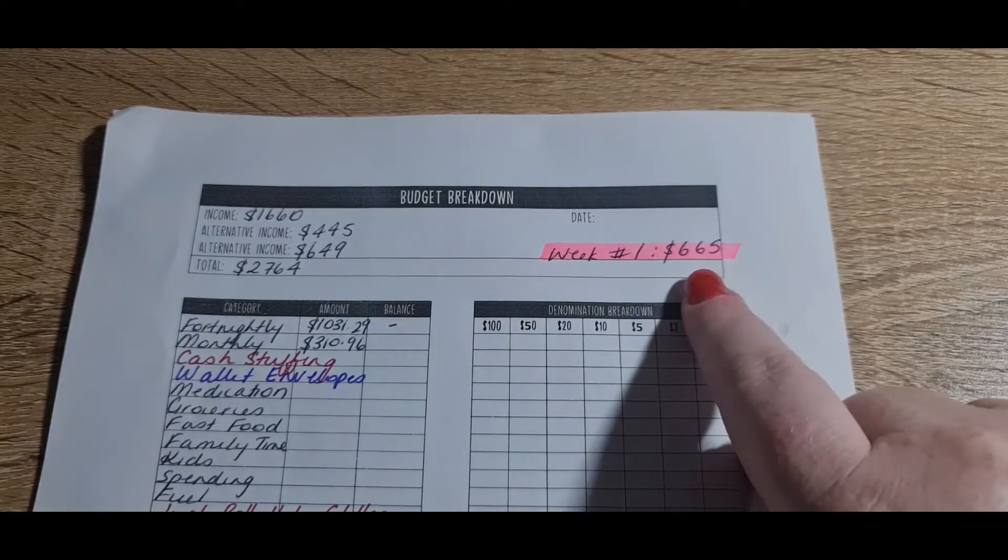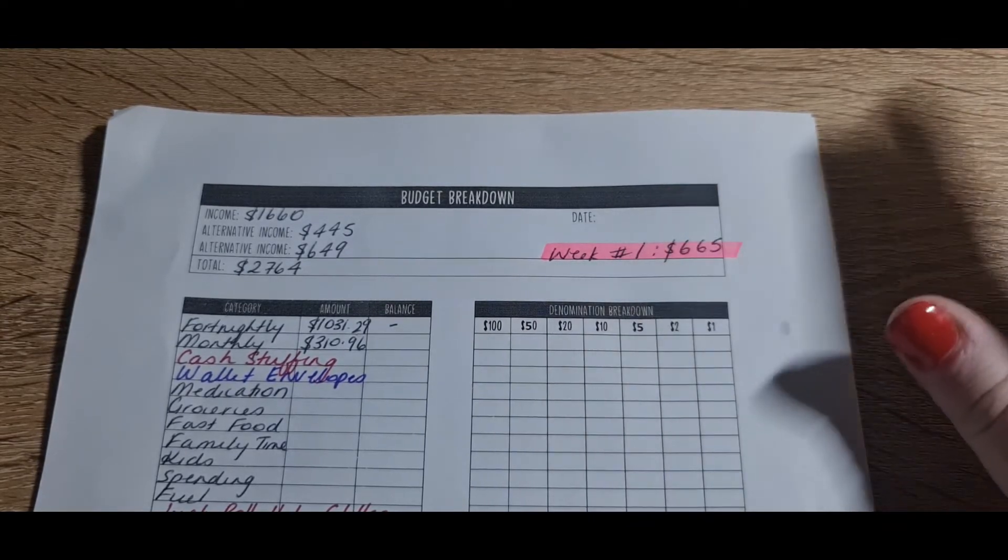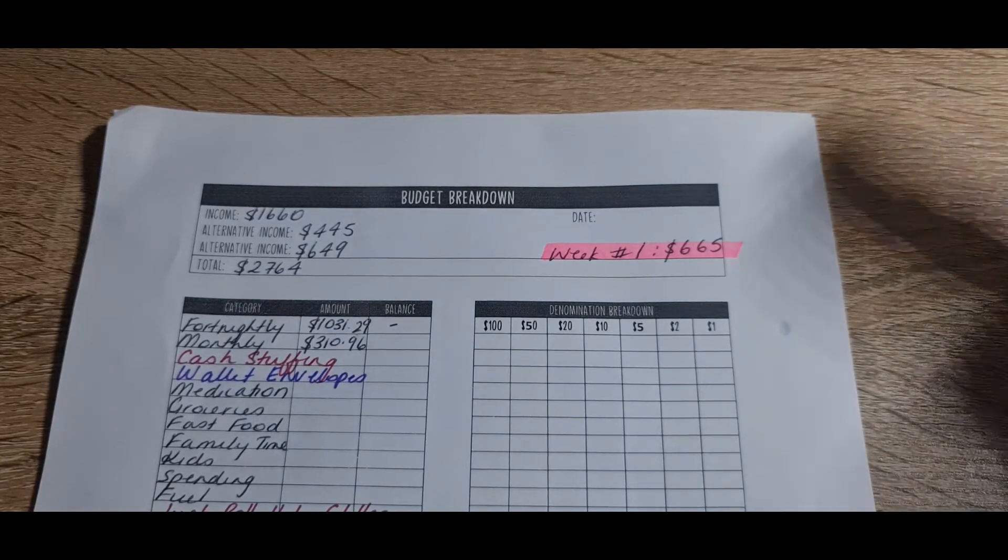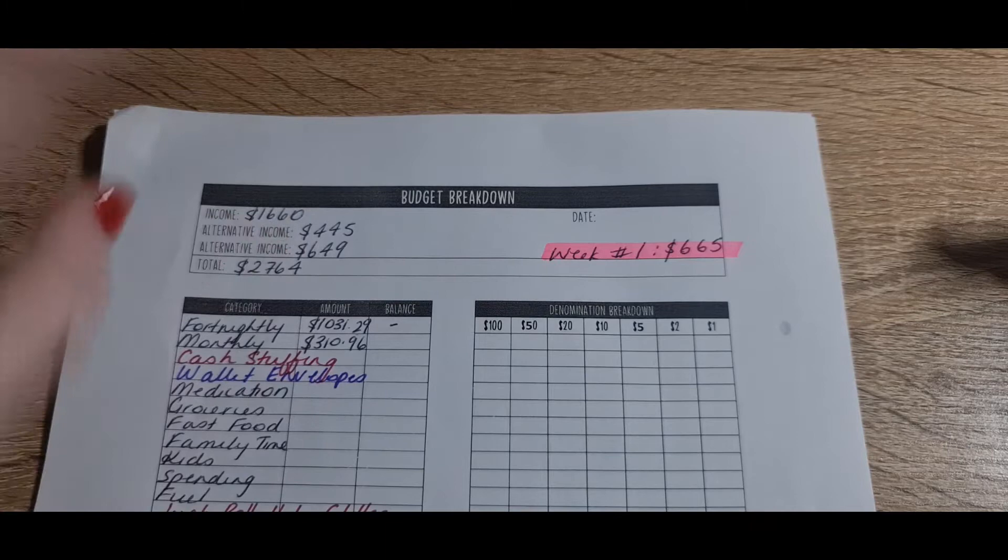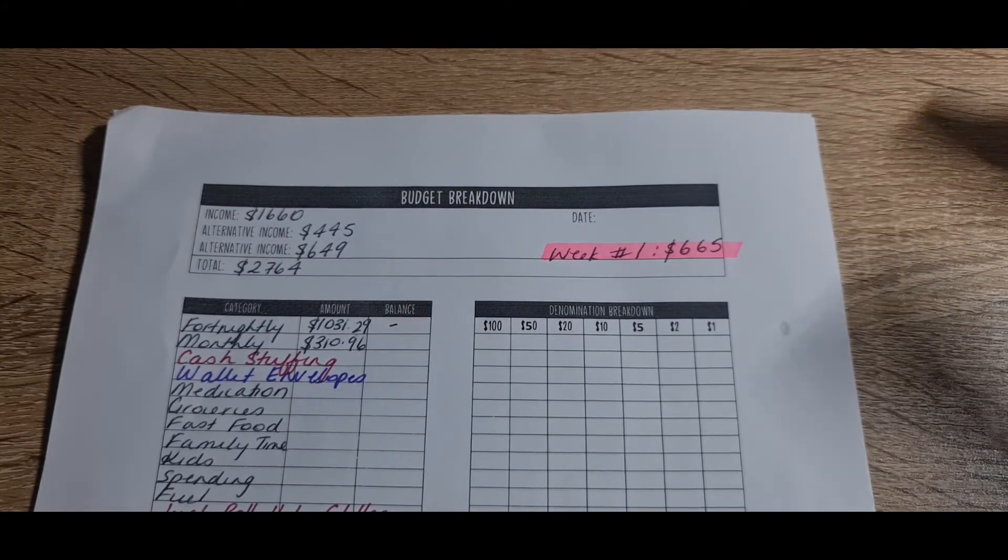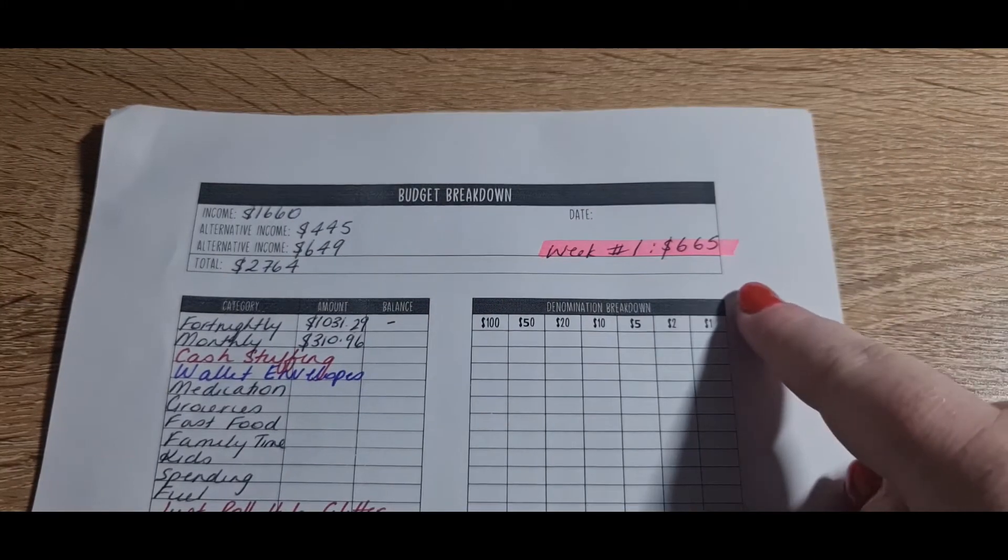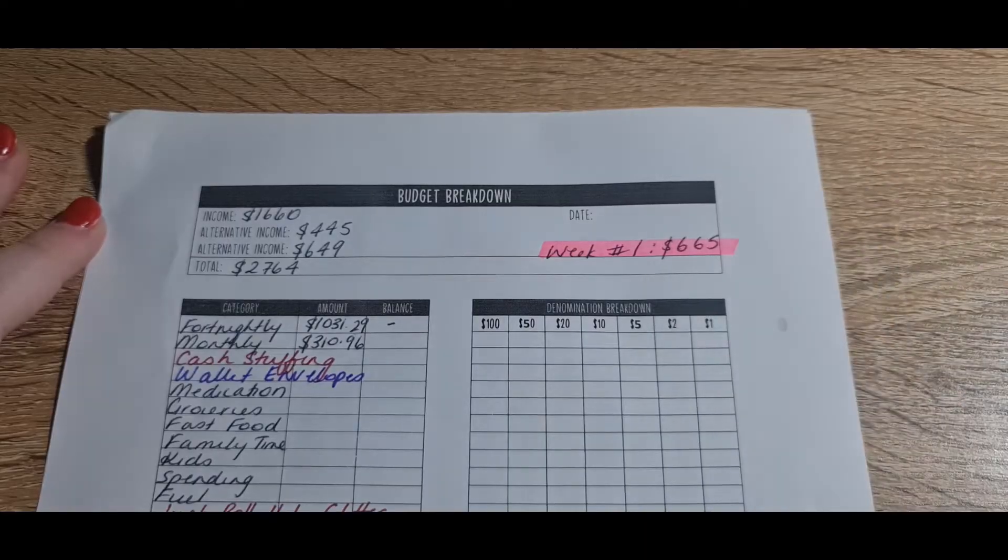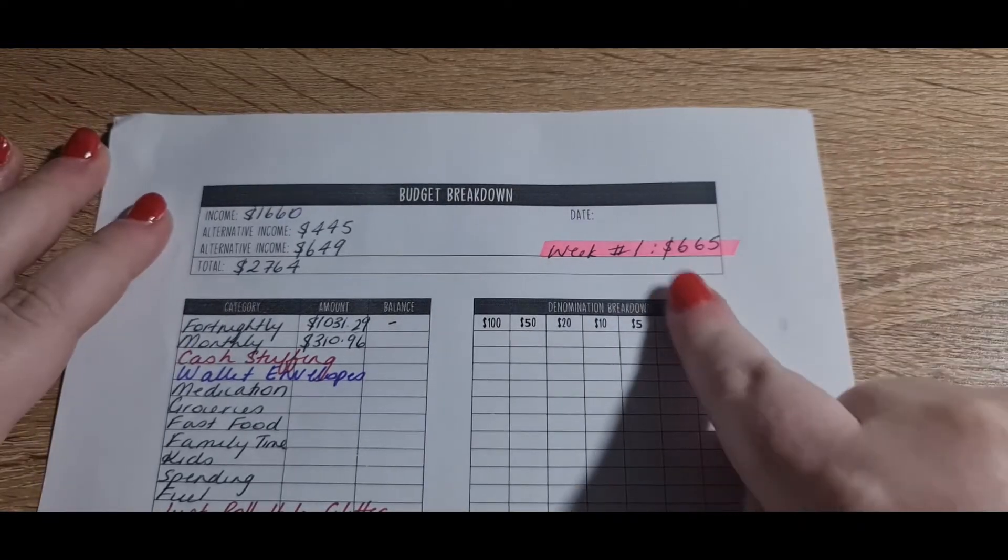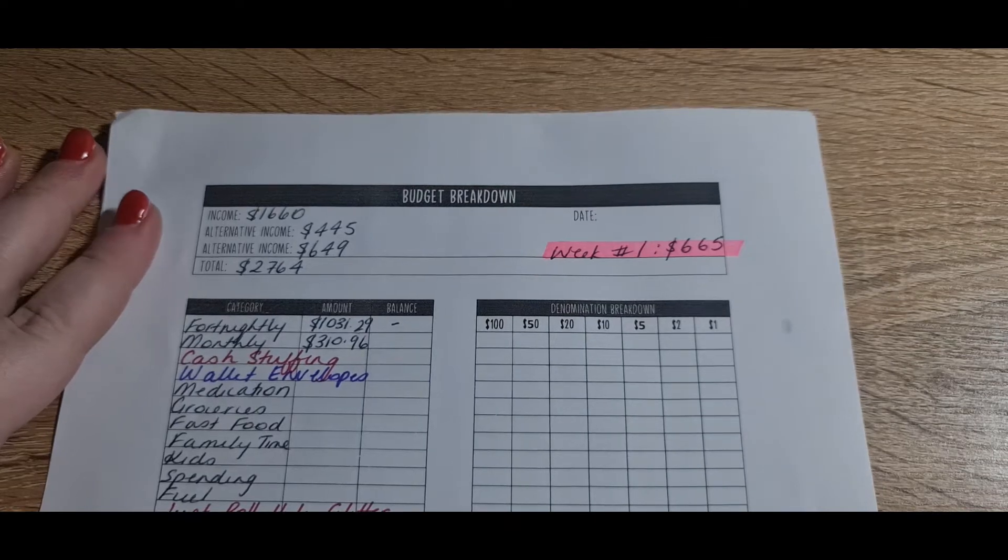So for week one, $665 is what I am cash stuffing. But this will change because, as I explained in the last video, when my envelope reaches its goal, so I've got a limit of $500, I pull that money out from my income. I transfer that amount of money into whatever account it's allocated to, and then I use that money to cash stuff.